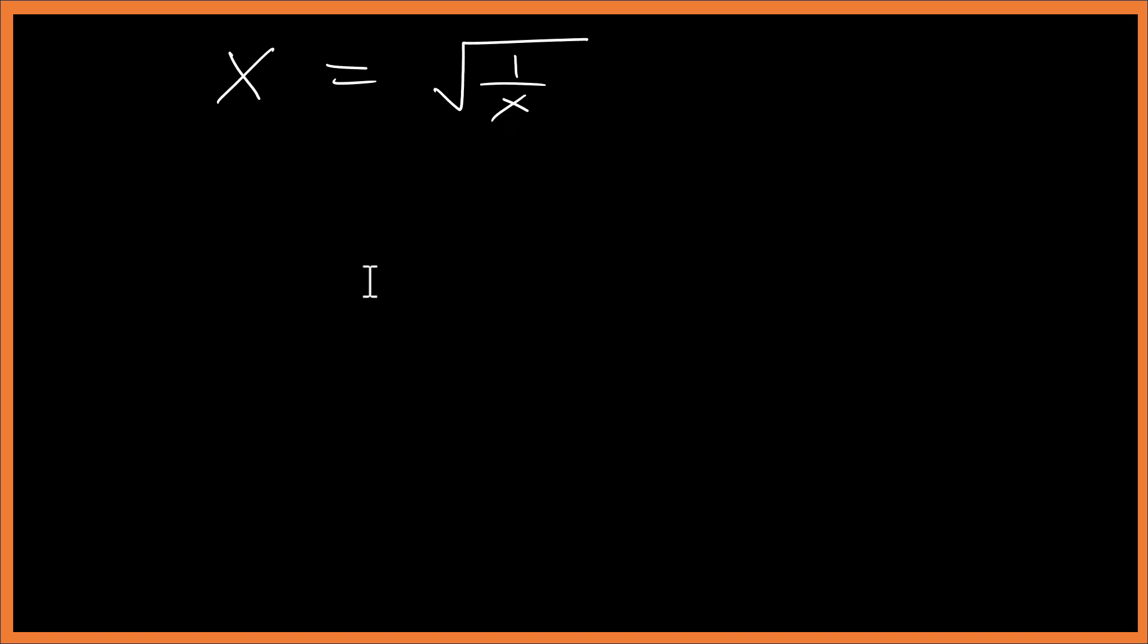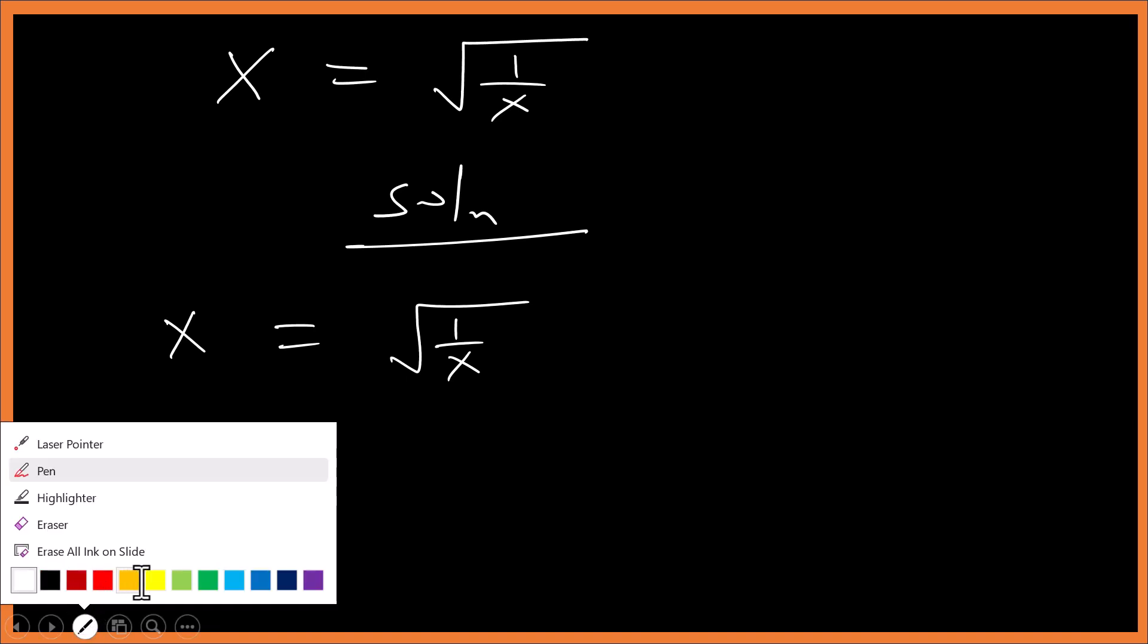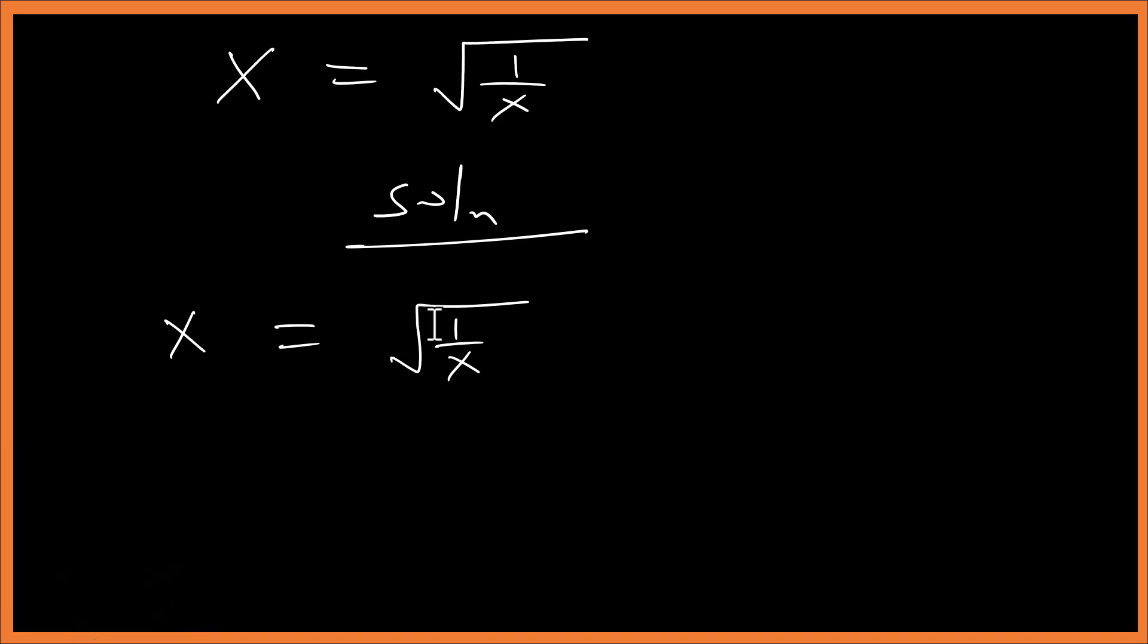Welcome to another video. Let's solve for x here. Solution: we have x equals 1 over x. From here, because it is complicated to work under the root sign, we have to remove the square root.